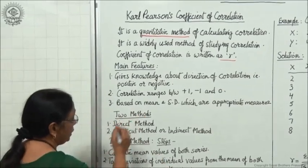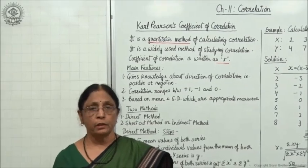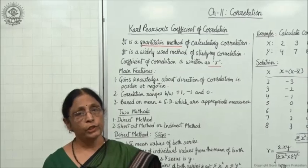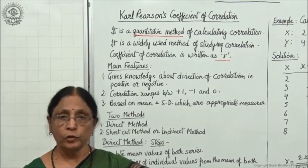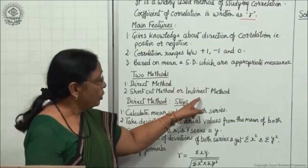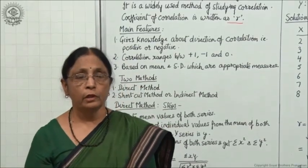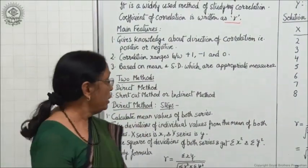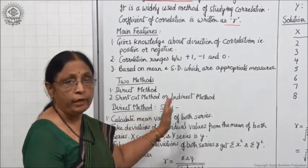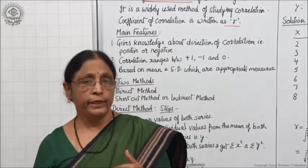There are two methods of finding out correlation. Karl Pearson has stated two methods: one is the direct method, which is the calculation of correlation by actual mean, and the second is the shortcut method or indirect method, in which we find out correlation with the help of assumed mean. First we will take the direct method, and then we will move to the indirect method.